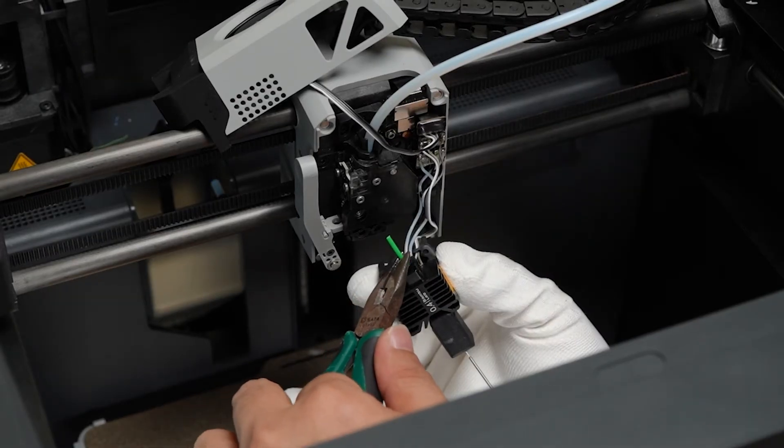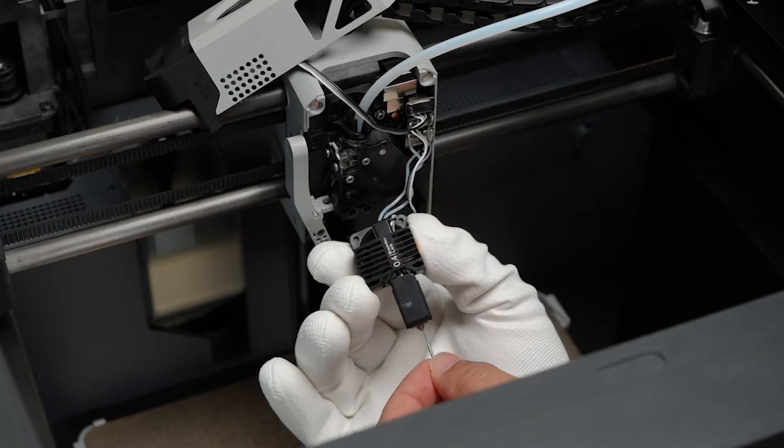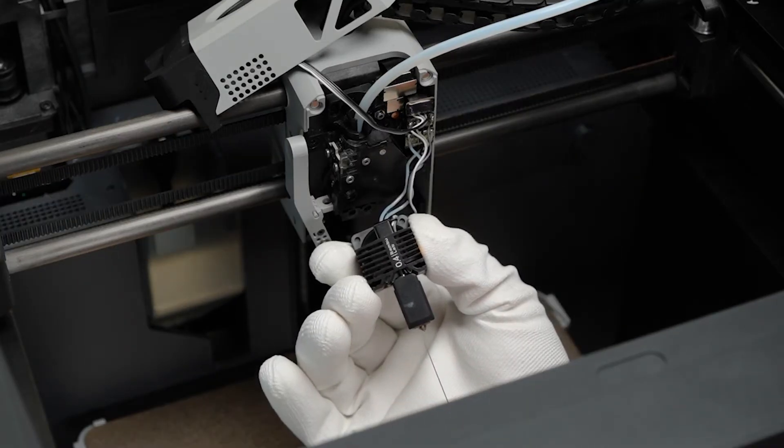Now, with a pair of nipper pliers, remove the filament that has been pushed out of the nozzle. Once you've done that, remove the pin tool from the nozzle.